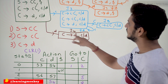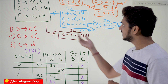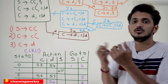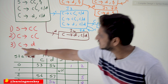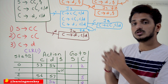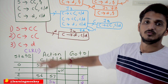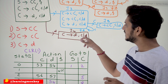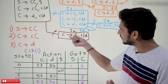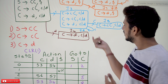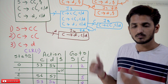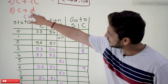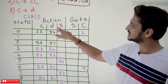For state i4: C tends to d dot — dot is present at the end, so we have to do reduce action. C tends to d is the third production, so reduce to production 3. The important point: we do reduce action only at the lookahead symbols. After completion of this production we look at the lookahead symbol — c or d — and only at those places we write the reduce action. Reduce to third production on lookahead symbols only.